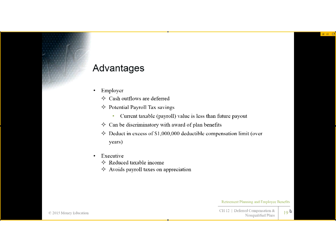Some advantages to the employer: compensation is promised for the current year for work done during the current year, but is not paid in the current year — so you defer that savings. There are payroll tax savings, you can be discriminatory in who you include, and you can eventually deduct over a million dollars for work done this year, even though you can't in the current year. For the executive, you get to reduce taxable income and avoid payroll taxes on the appreciation.